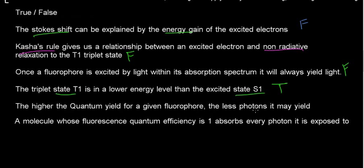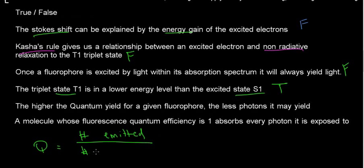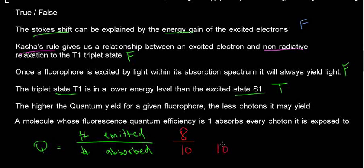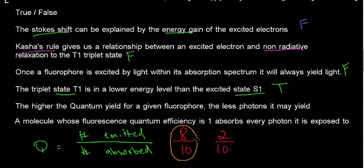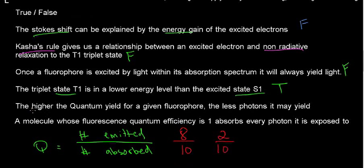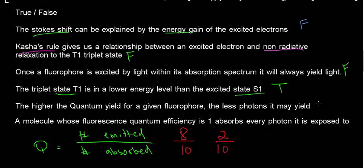The higher the quantum yield for a given fluorophore, the less photons it may yield. Recall: quantum yield equals number of photons emitted over number of photons absorbed. If I had 10 photons absorbed and yielded 8, that's a higher quantum yield than yielding only 2. So the higher the quantum yield, the more photons it yields — not fewer. This statement is false.